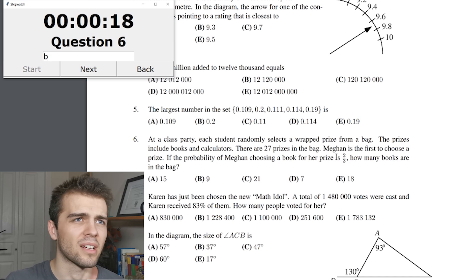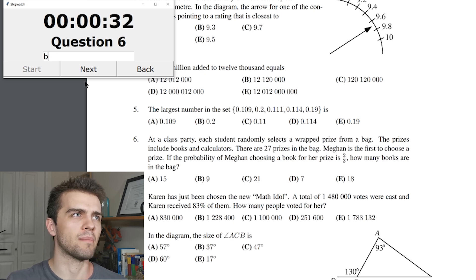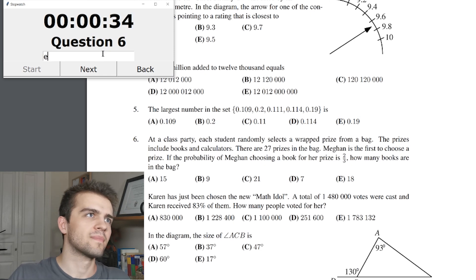Well, there's 27 prizes and this might be a trick. Got to read it carefully. The probability of her choosing a book is two-thirds and she's the first to choose a prize. Then I believe that there would be 9, 18, 27, so 18 books in the bag. Correct. Okay, good. No ice yet.